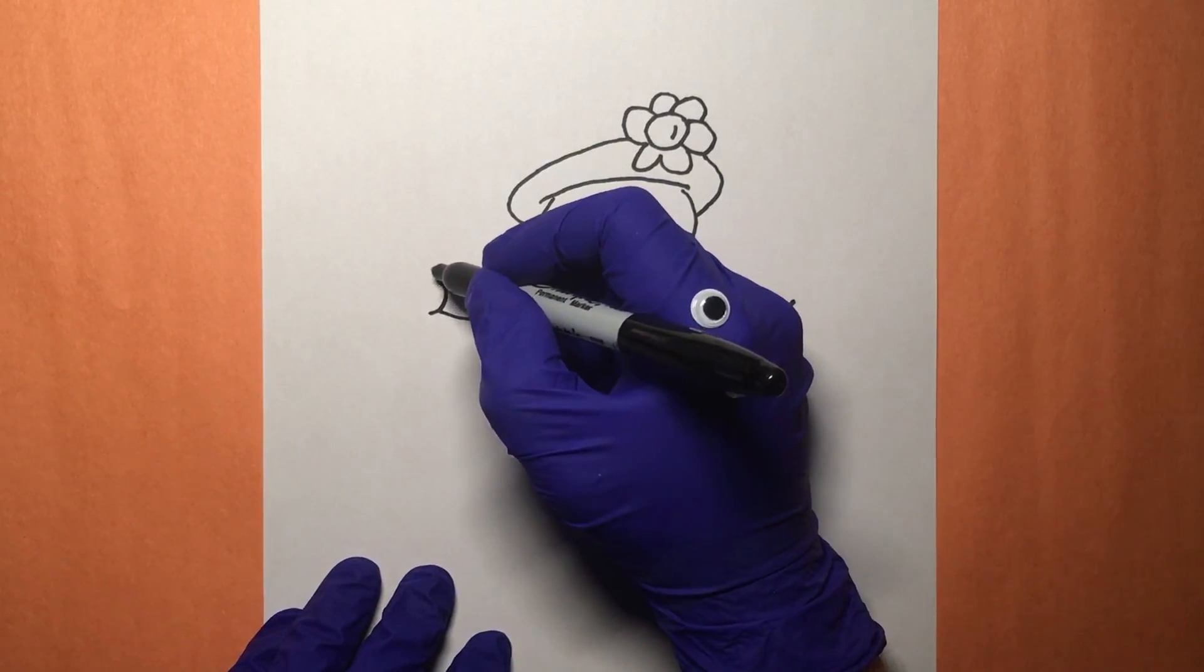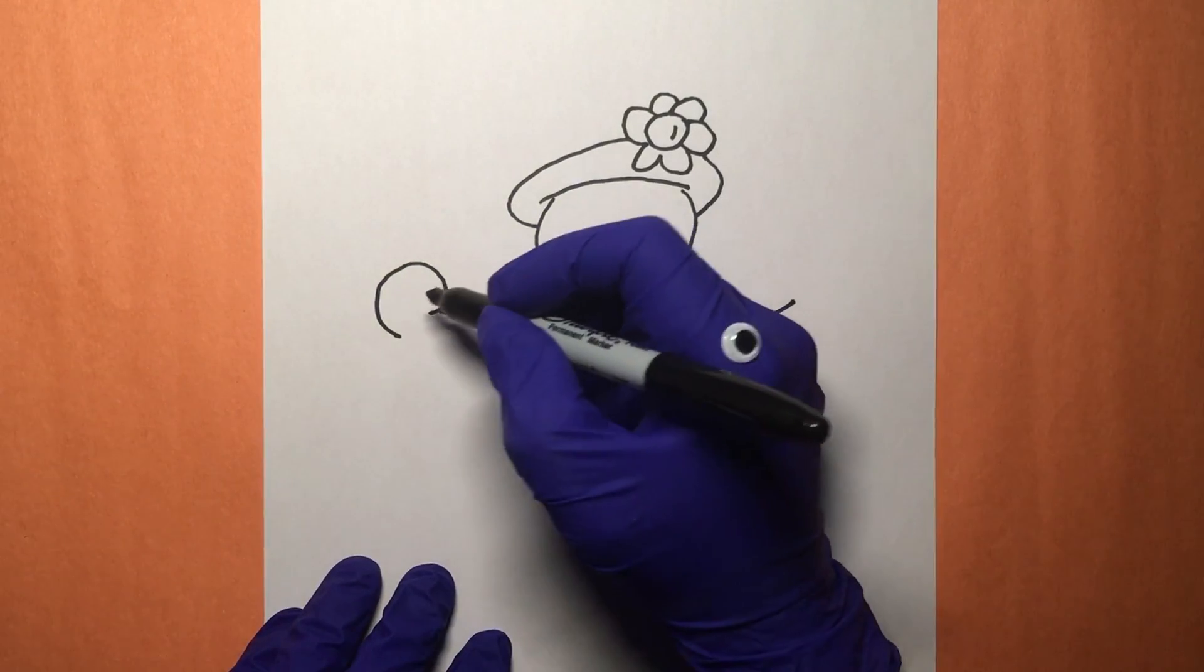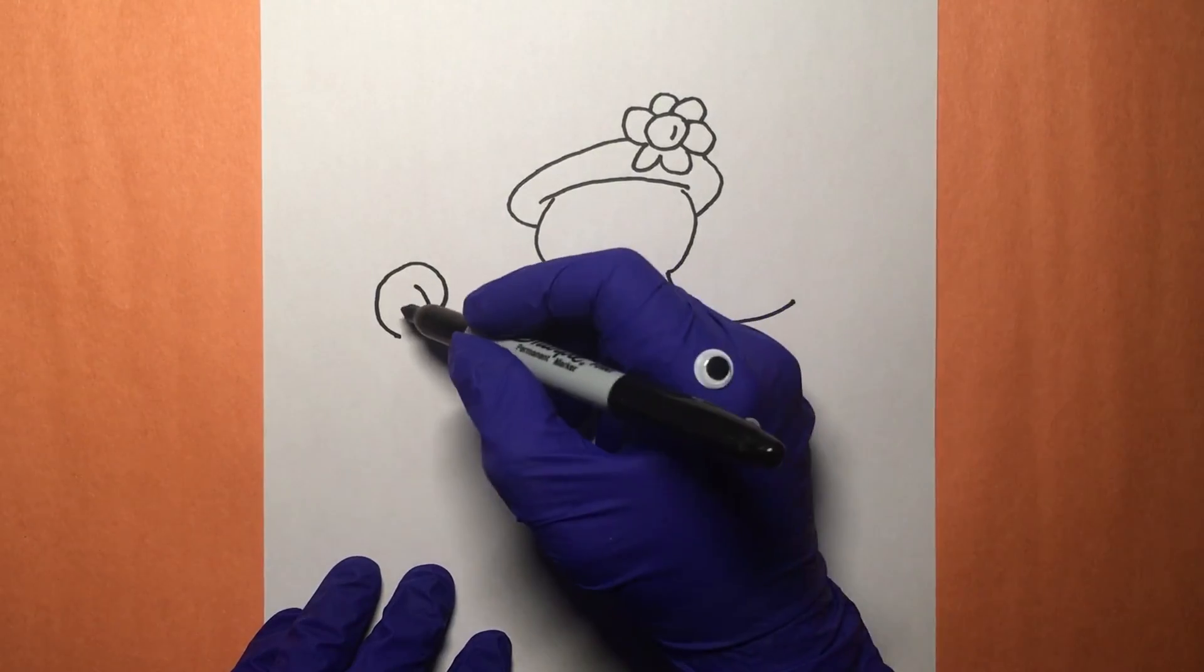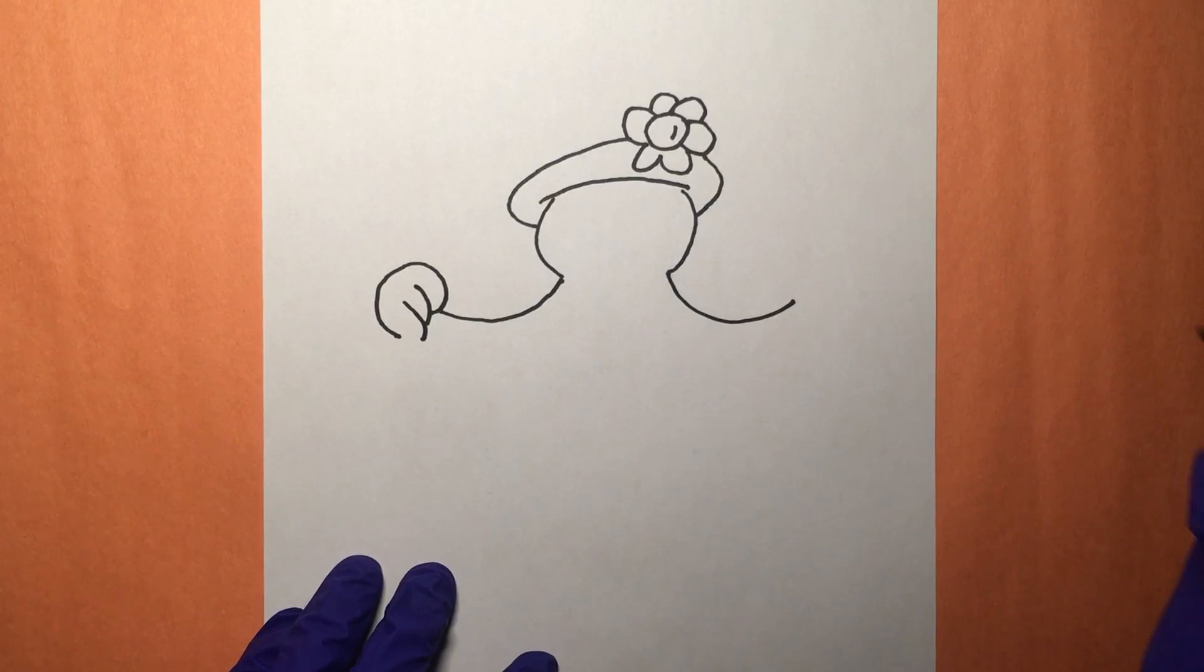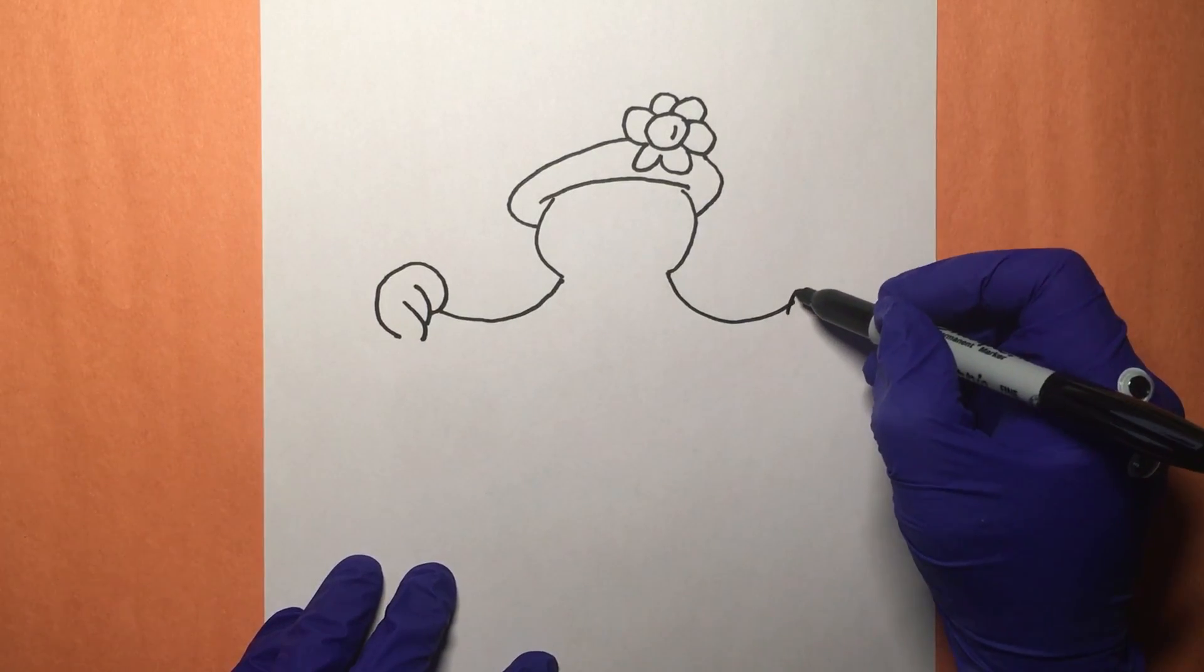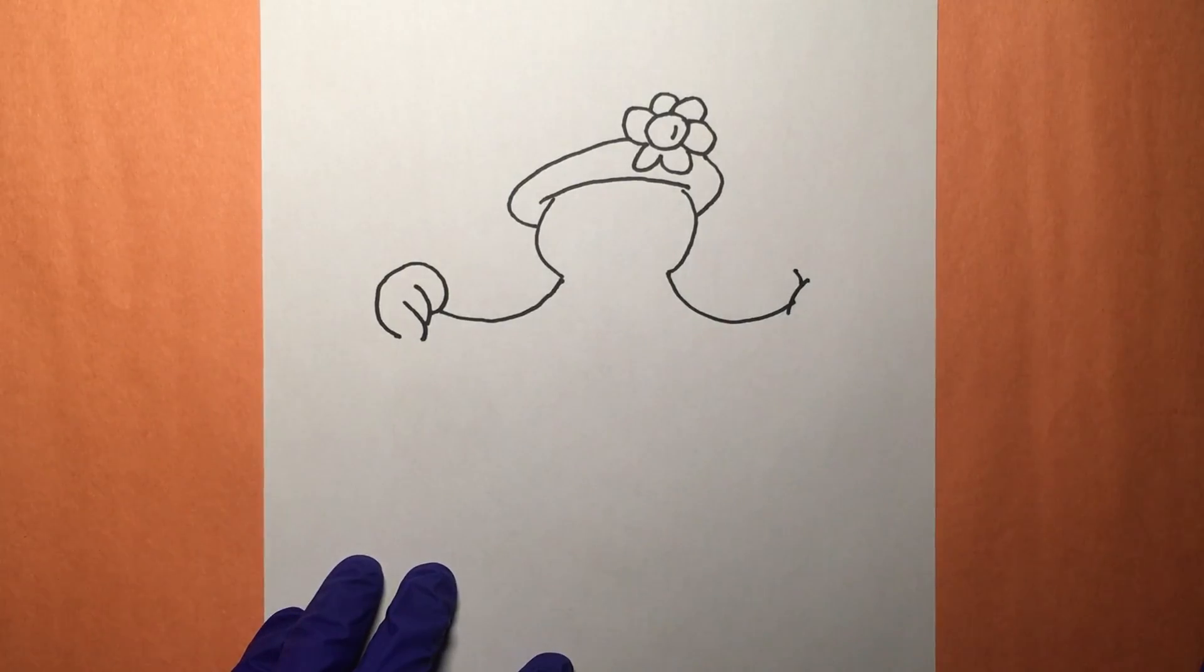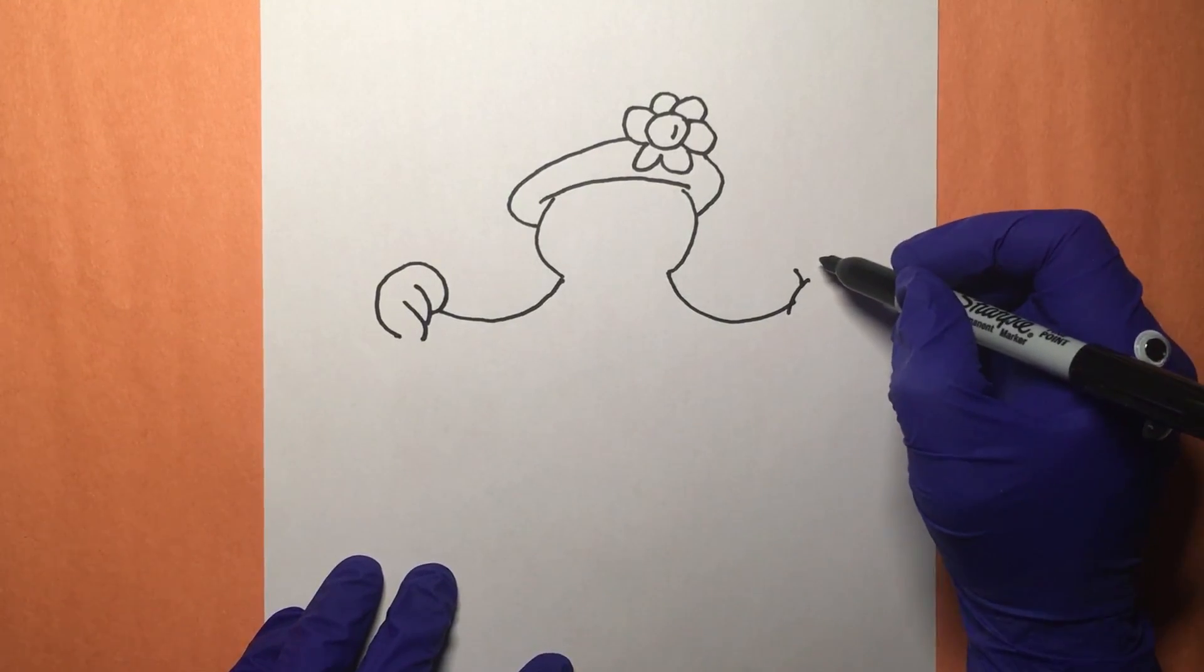Now we're gonna draw Frosty's hand that's holding the broom, so make a big circle like that and that will represent the fingers coming around. There we go. Three fingers for Frosty, a little area so that he can manipulate his hand up. He's holding a pipe.